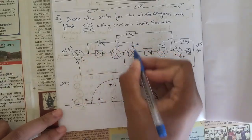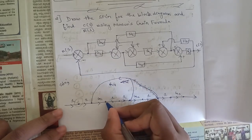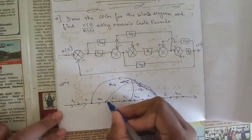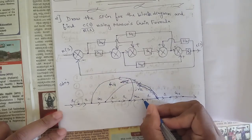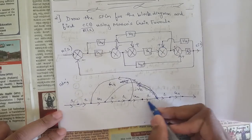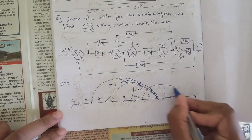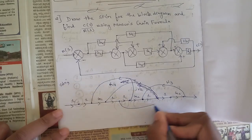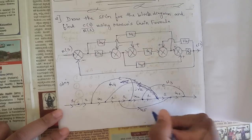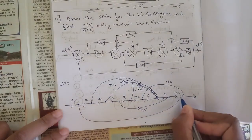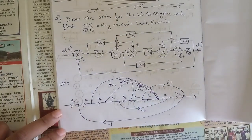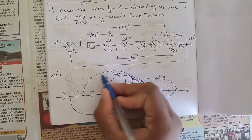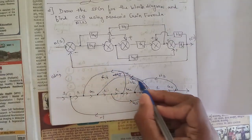From here to here, and from this point to this point, we have one more path, which is also minus H2. Then from this summing point till the end we have H3. There is also a loop with G5 from here to here. And from here to here we have one more loop with unity feedback, that is minus 1. So this is the complete signal flow graph with all the values — please ignore the small mistake, this loop goes here and this loop goes here.